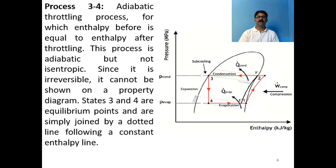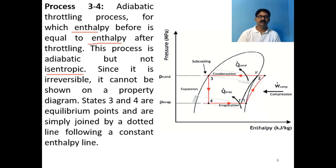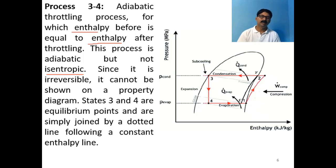Process 3 to 4 is the adiabatic throttling process, for which enthalpy before equals enthalpy after throttling — this is an isenthalpic process. This process is adiabatic but not isentropic: though there is no heat transfer, entropy does not remain the same. Since it is irreversible, it cannot be shown on a property diagram, so states 3 and 4 are simply joined by a dotted line following the constant-enthalpy line from 3 to 4.